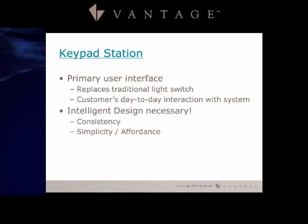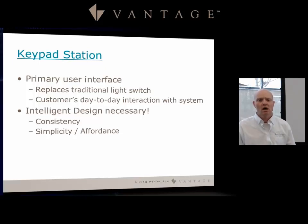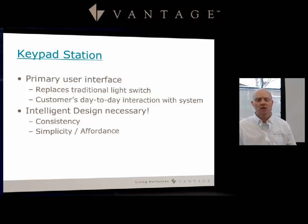Part of intelligent design includes consistency throughout the entire project — having a similar design on all keypads so the client knows that the top button does this and the bottom button does that, no matter which room they're walking into. Simplicity and affordance mean it becomes learned behavior by the client. If you use multiple different programming techniques throughout the house, there can be a lot of confusion and frustration.